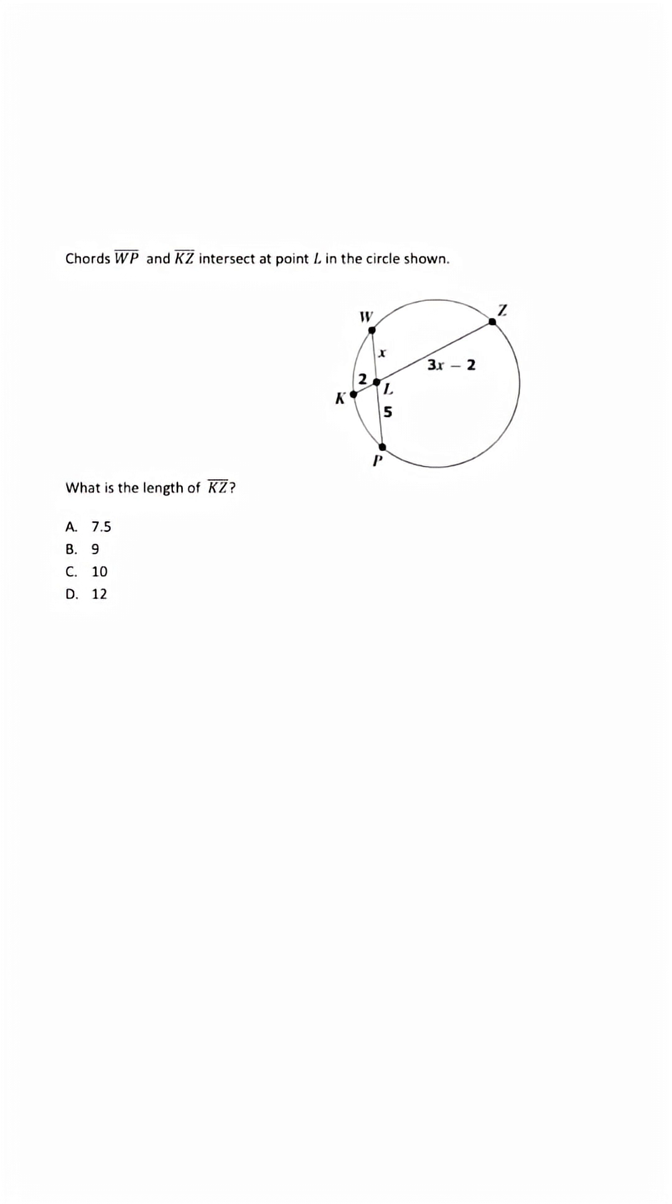They give us a circle with intersecting chords, and we need to determine the value of x so it can find the length of KZ. So for us to do this, we're going to have to use the intersecting chords theorem.